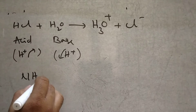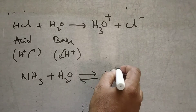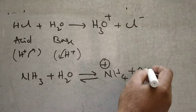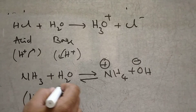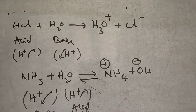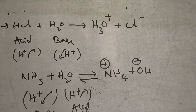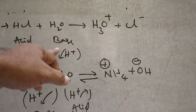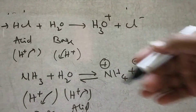Now suppose you take NH3 reacting with water. It is converted into NH4⁺ and OH⁻. Here ammonia is attracting the proton, and water is donating the proton. So water acts as an acid and ammonia acts as a base. In the first reaction water acted as a base; in the second reaction water acts as an acid. That is why we call water an amphoteric substance — it can both donate and accept protons.